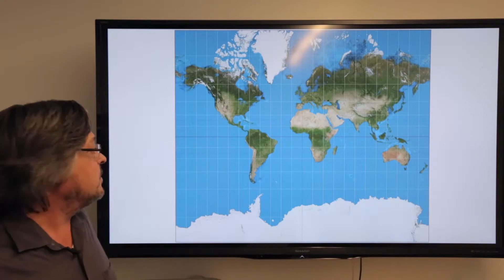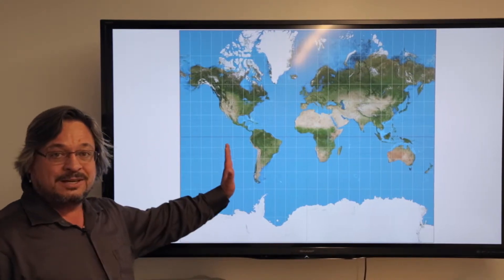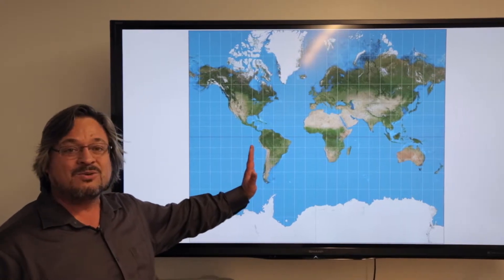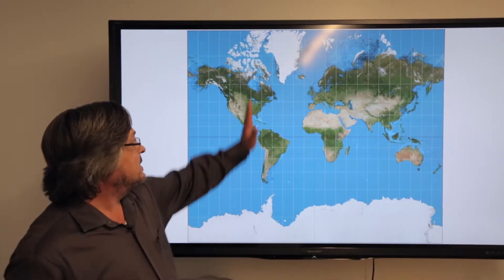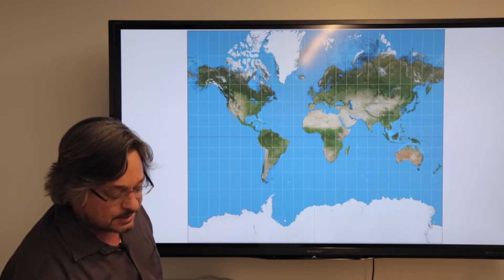But the transverse Mercator, rather than using a standard line at the equator, flips it, so that the equator runs north to south. The line that's touching the cylinder becomes a line of longitude instead of a line of latitude.